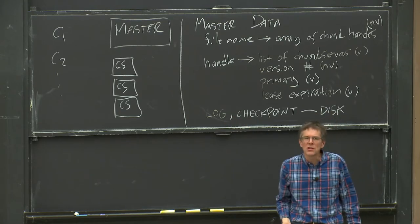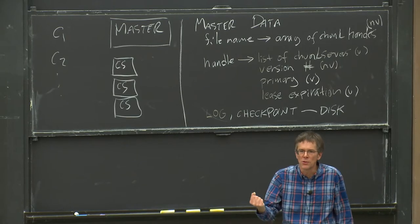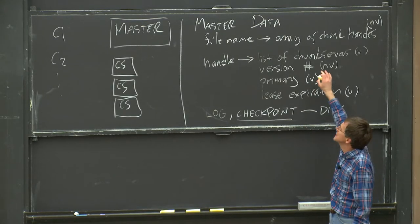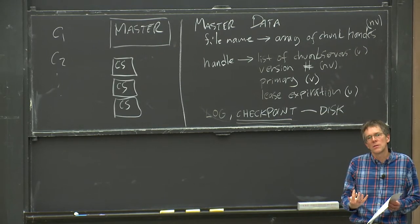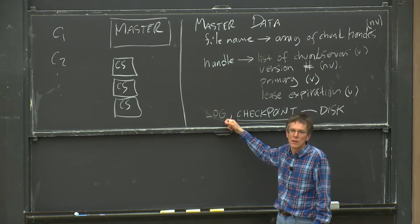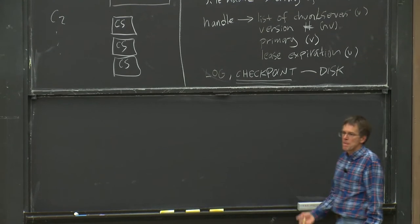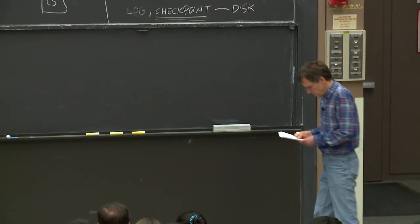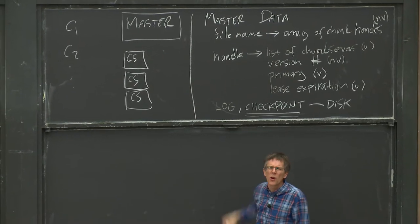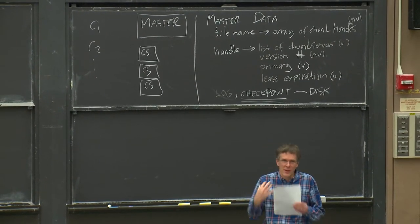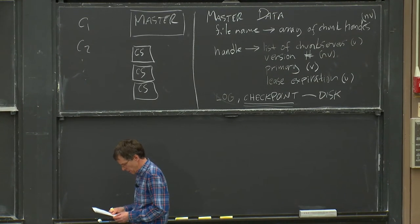Whenever a file is extended with a new chunk or the version number changes, the master appends a record to its log. The reason for using a log rather than a database is that you can append to a log very efficiently — you take a bunch of recent log records and write them in a single write after a single disk rotation to the end of the log file. If instead it were a B-tree, you'd have to seek to a random place in the disk for each small write. However, to avoid replaying the entire log from the beginning on restart, the master sometimes checkpoints its complete state to disk. On restart, it goes back to the most recent checkpoint and replays only the portion of the log since that checkpoint.